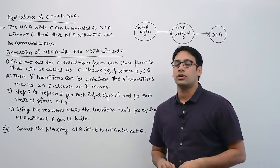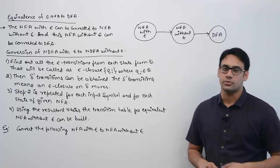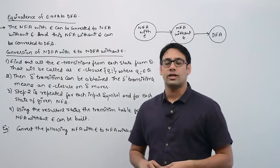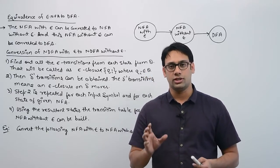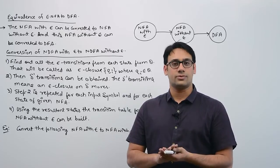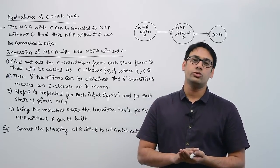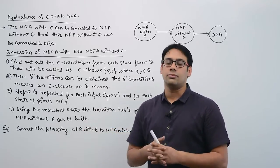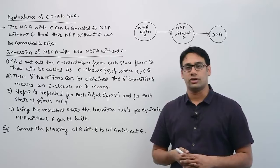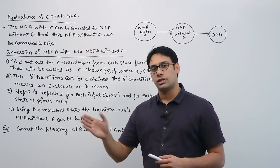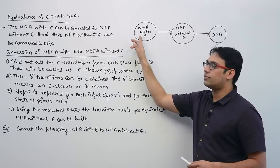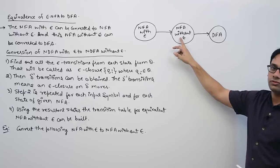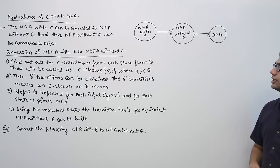Now let us see how to convert an Epsilon-NFA to NFA. Epsilon-NFA means the NFA with Epsilon transitions. To convert an Epsilon-NFA to NFA, we need to know the Epsilon closure and then use it in the conversion. The procedure is: we have an Epsilon-NFA with Epsilon moves, we convert it to an NFA without Epsilon moves, and then we convert that NFA to a DFA.